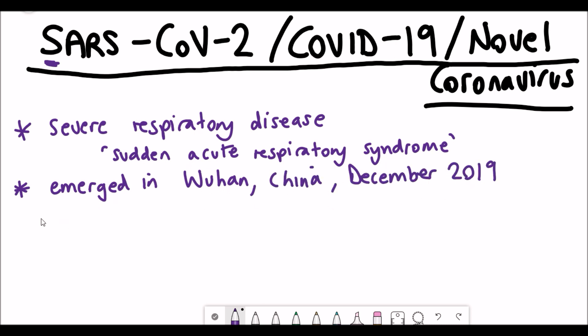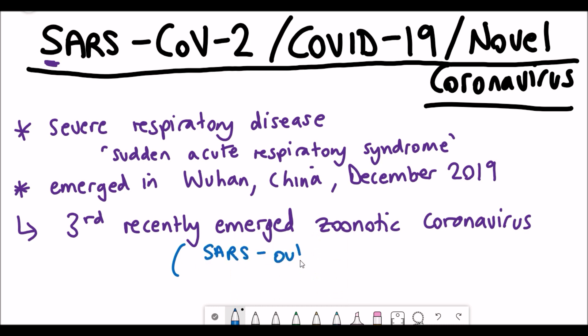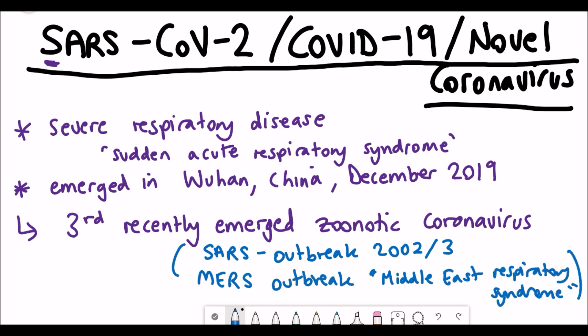So this isn't the first coronavirus outbreak that's ever occurred. It's actually the third recently emerged zoonotic coronavirus outbreak. And this is after the SARS, the Sudden Acute Respiratory Syndrome outbreak in 2002-3, and the Middle East Respiratory Syndrome outbreak that also occurred recently.